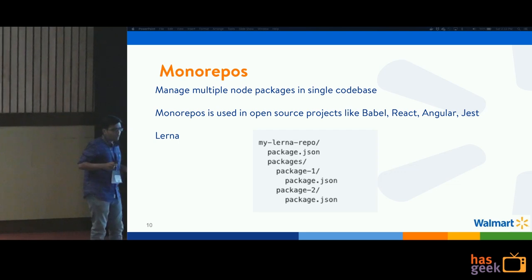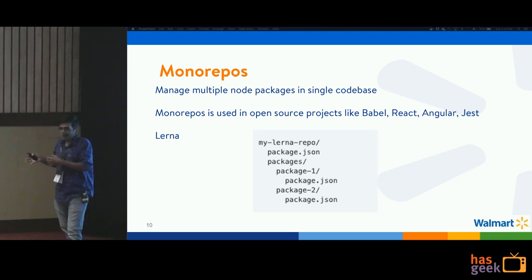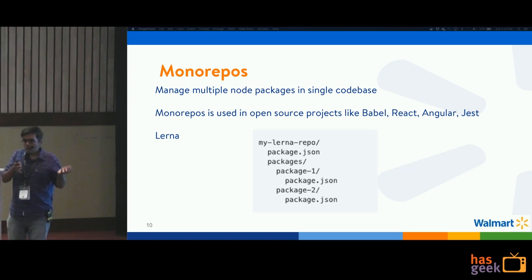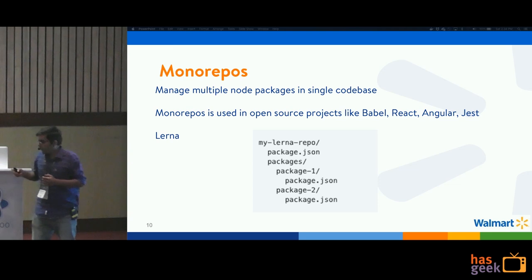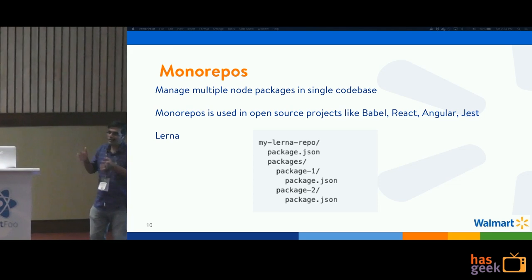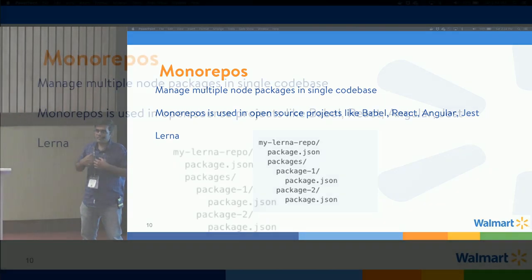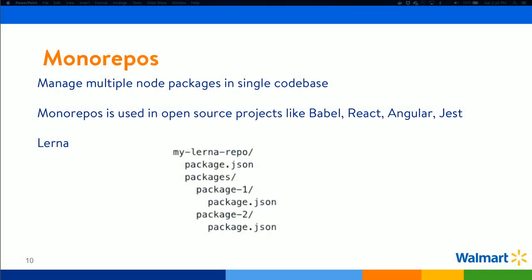That was the theory of how you can build your applications and divide them into npm packages, but how do you do that in your codebase? Consider a scenario where you have multiple repositories for your packages. If I divide my application into 3 or 4 packages with 3 or 4 repositories on GitHub, to release I'd have to go to each repository, send a pull request, get it merged, and update the version number — that's a bit of an overhead.